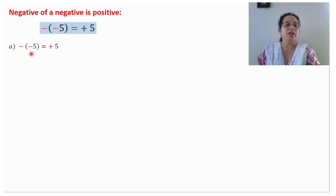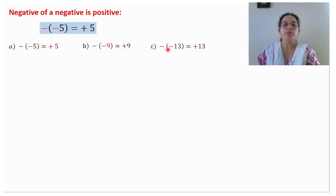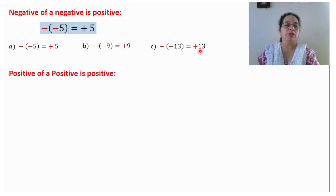Let us take another example. Negative of a negative 5 is positive 5. Negative of a negative is positive 9. Negative of a negative is positive 13.